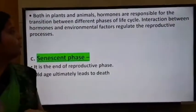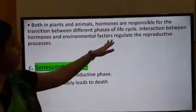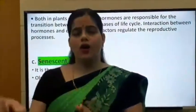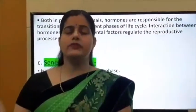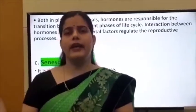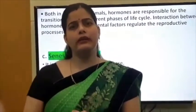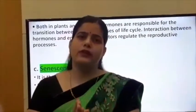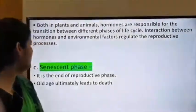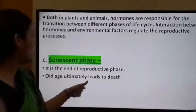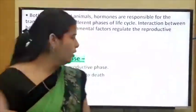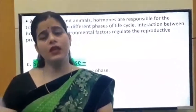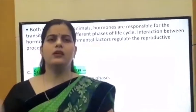In both plants and animals, hormones are responsible for the transition between different phases of the life cycle. The interaction between hormones and environmental conditions — abiotic factors like temperature and humidity — is responsible for the reproductive process. The last phase is the senescent phase, also known as old age, which ultimately leads to death, and in which the organism is not capable of reproducing.